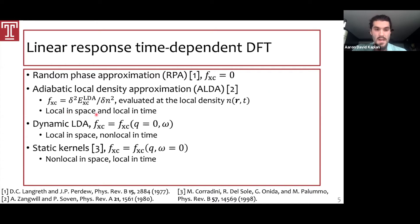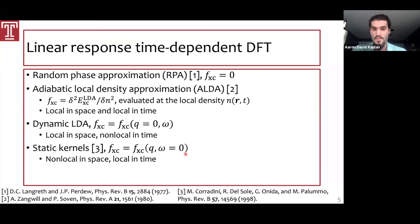Above these are dynamic LDAs, which are local in space but non-local in time — they have no Q dependence, only frequency dependence. Conversely, static kernels have Q dependence but no frequency dependence. Both of these are building blocks for more sophisticated functionals, but I'm going to focus more on dynamic LDAs here.